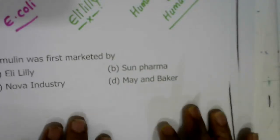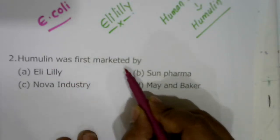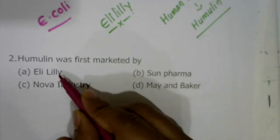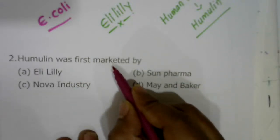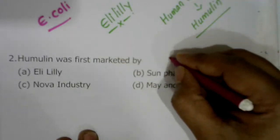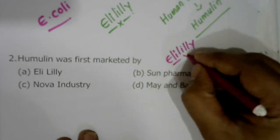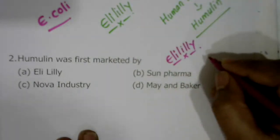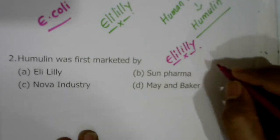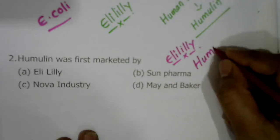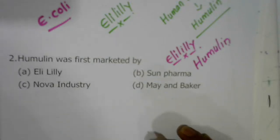Question two: Humulin was first marketed by whom? As already discussed, Humulin is artificially synthesized, genetically engineered insulin, and it was first produced by an American company called Eli Lilly. Eli Lilly is the first American company to sell genetically engineered insulin, so question two's correct answer is Eli Lilly.